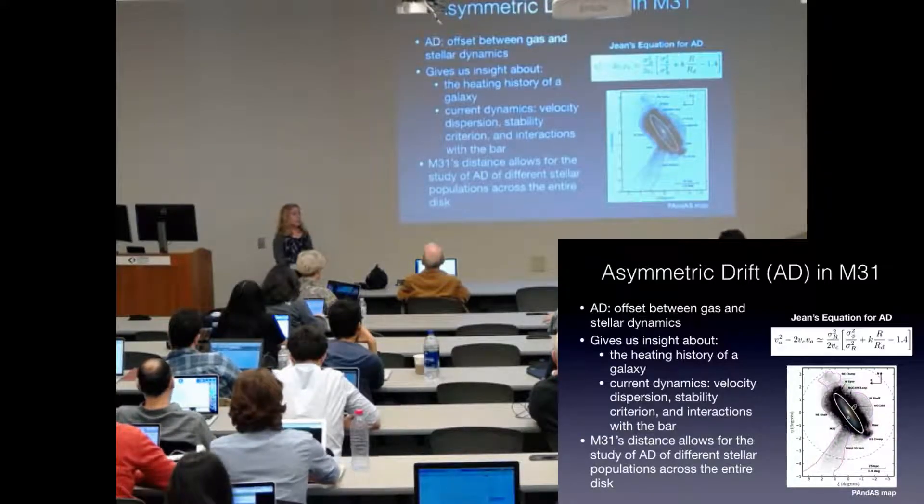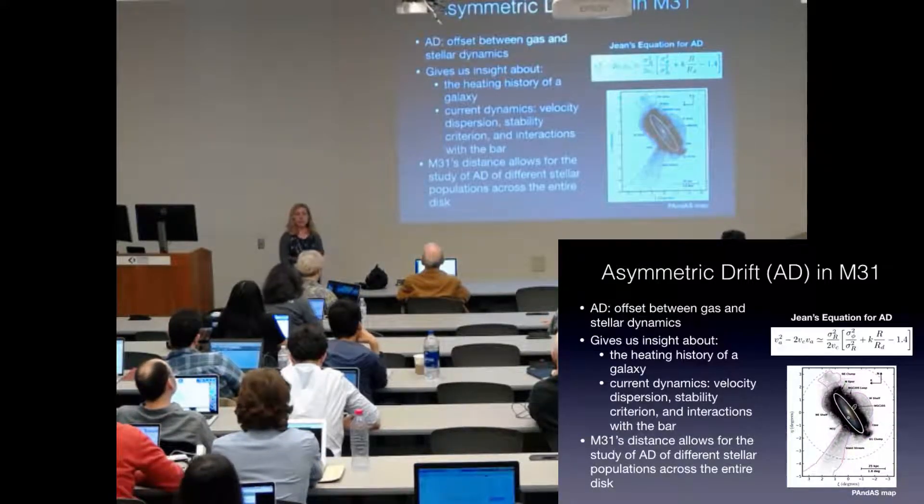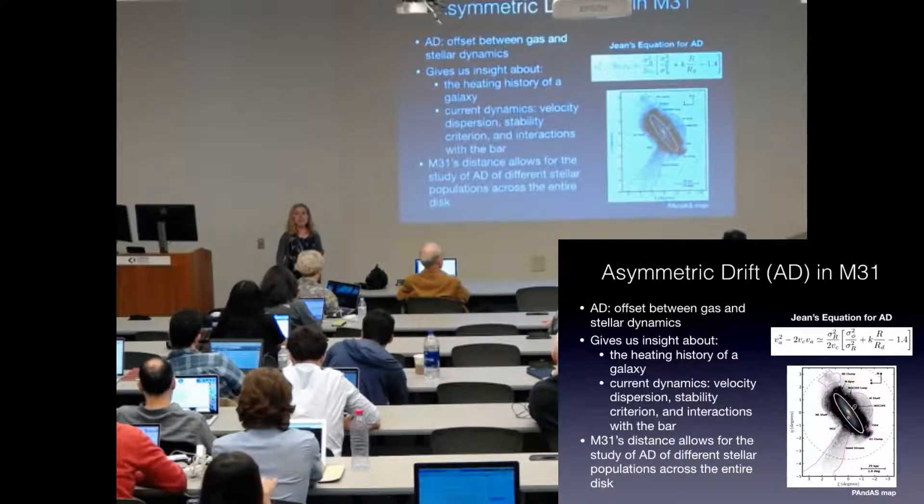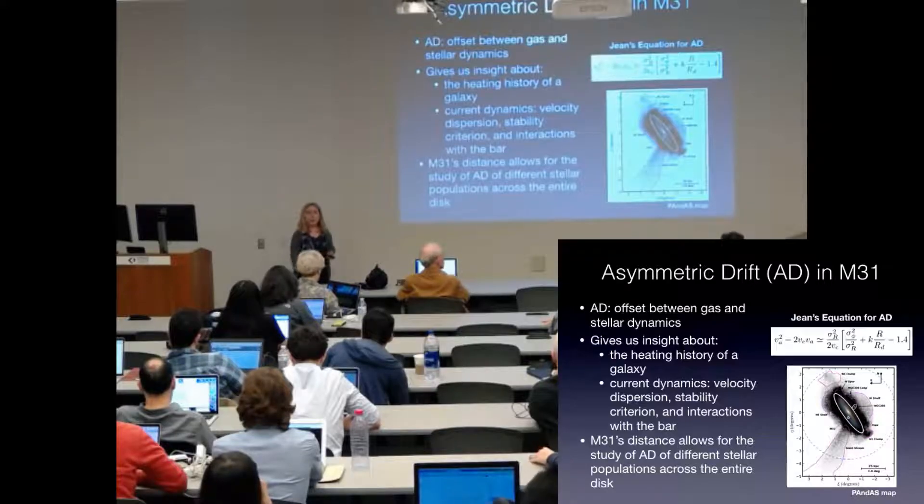It's also at the perfect distance for this kind of study because it's far enough away that we can measure asymmetric drift across the entire disk of M31 but close enough that we can do it for individual stellar populations.